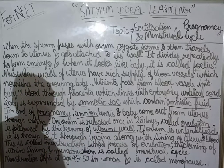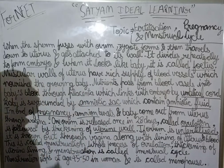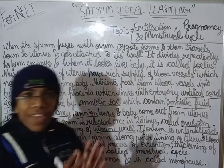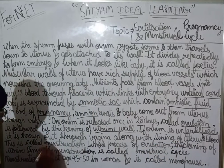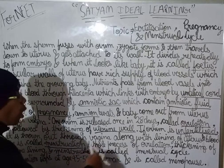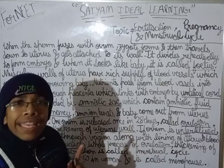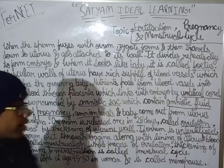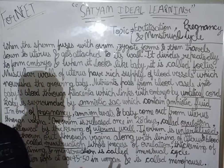If the ovum is unfertilized, it is thrown out through the vagina along with the lining of the uterus and blood. This is known as menstruation. The whole process of ovulation, thickening of the uterine wall, and menstruation is known as the menstrual cycle, and it completes in 28 days.